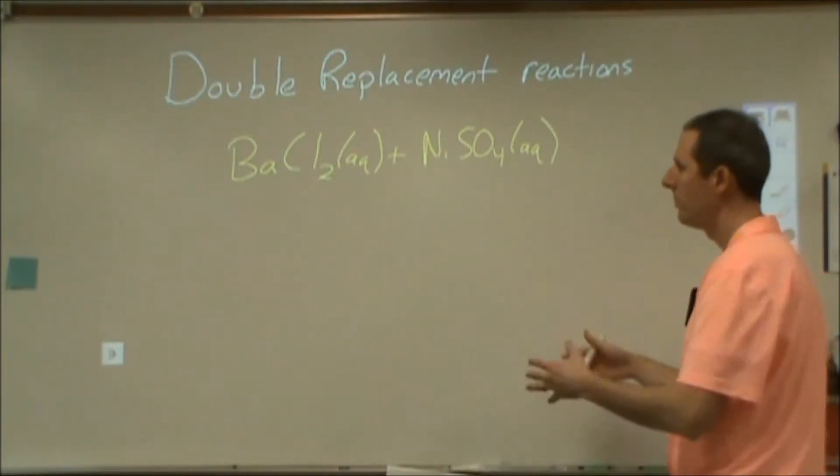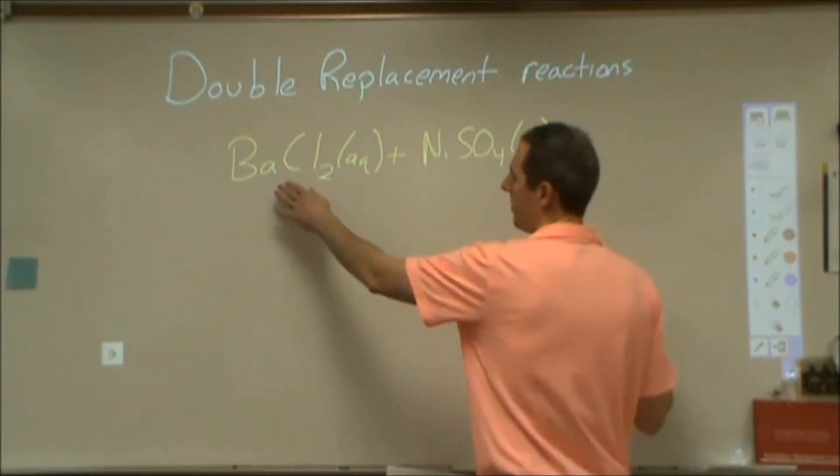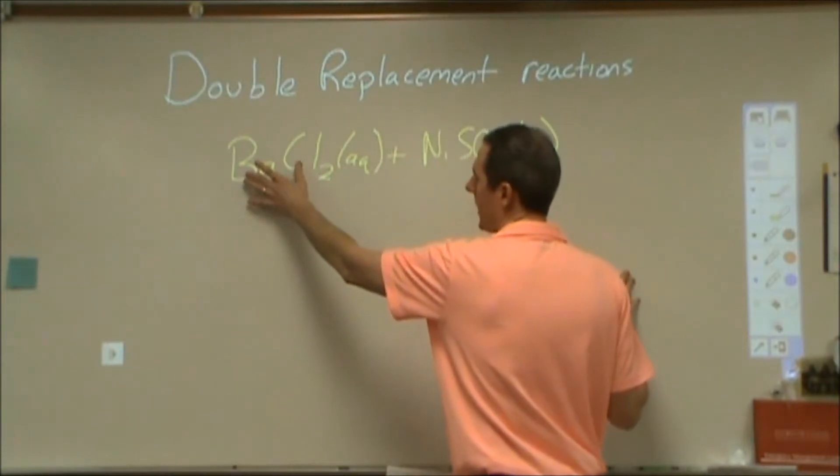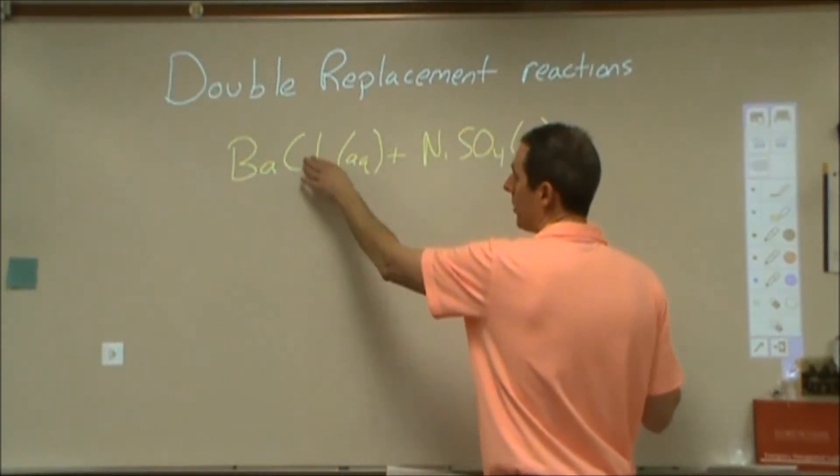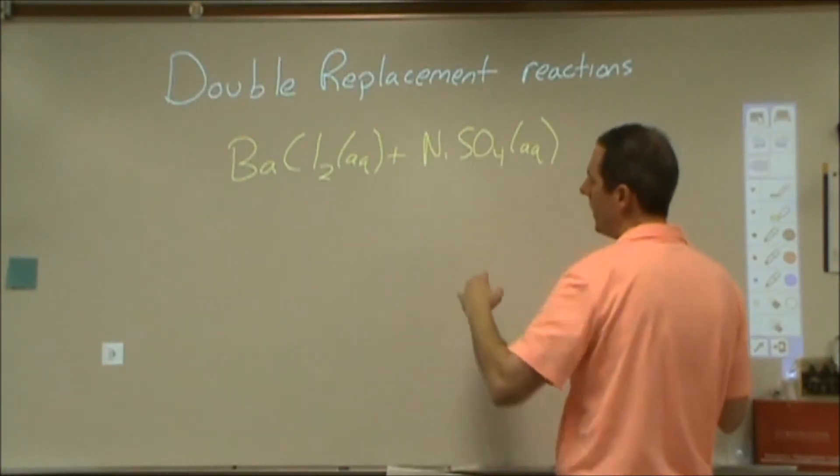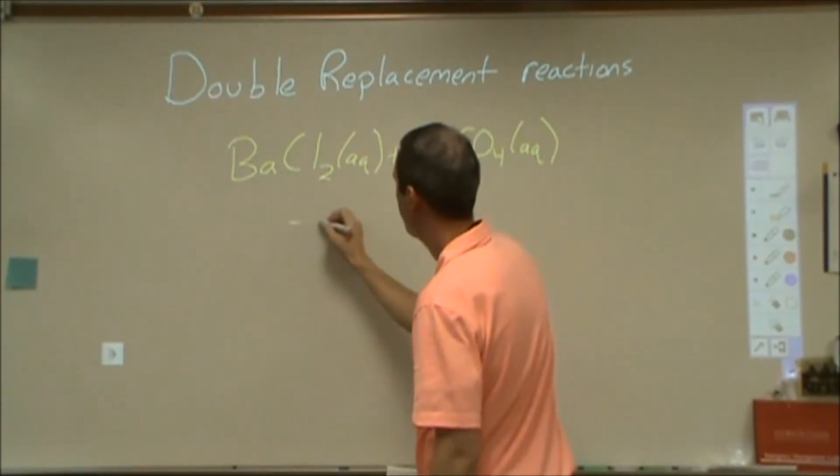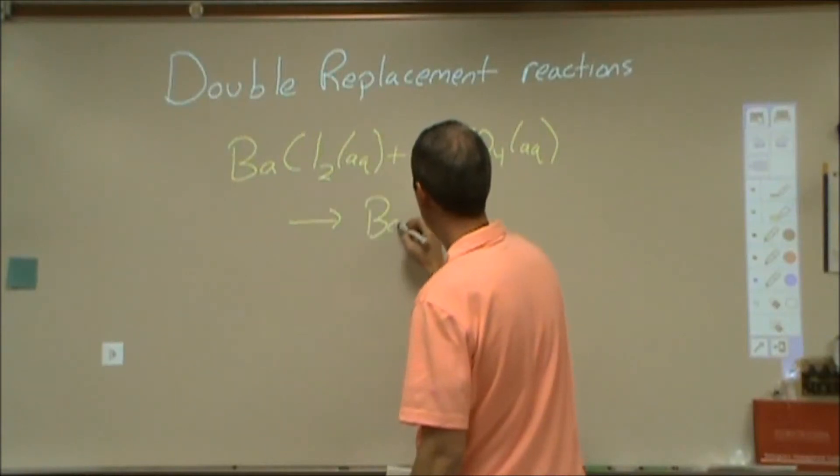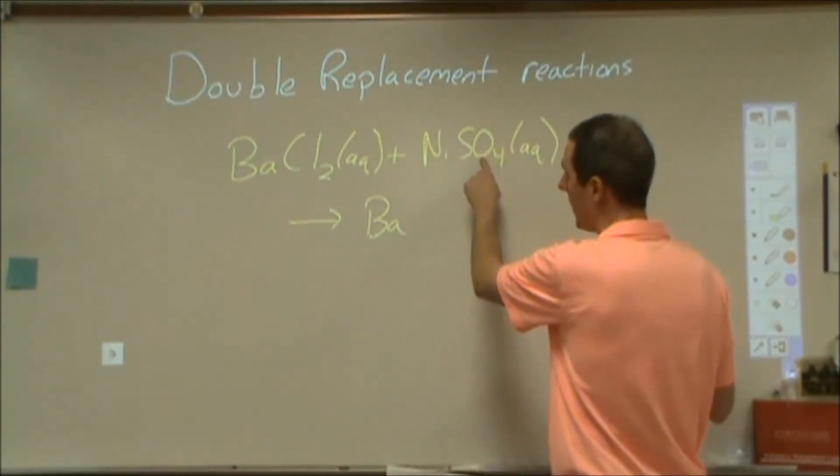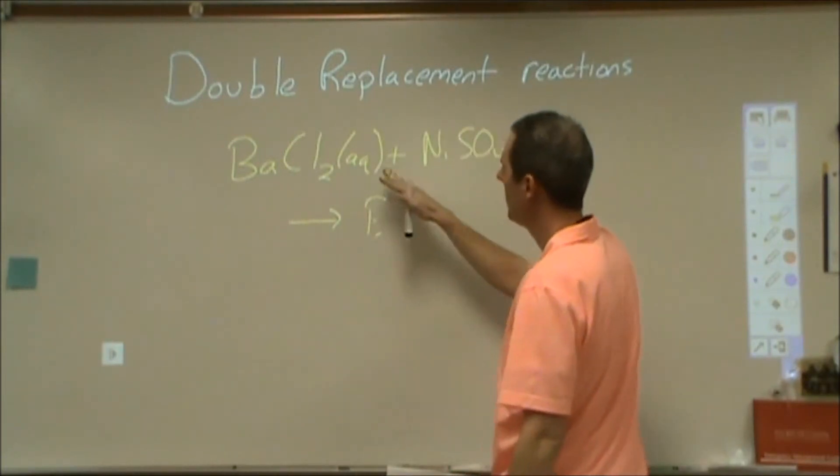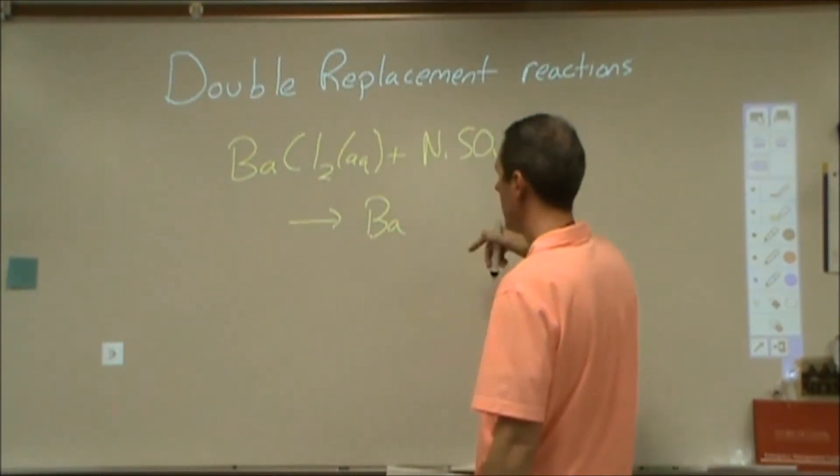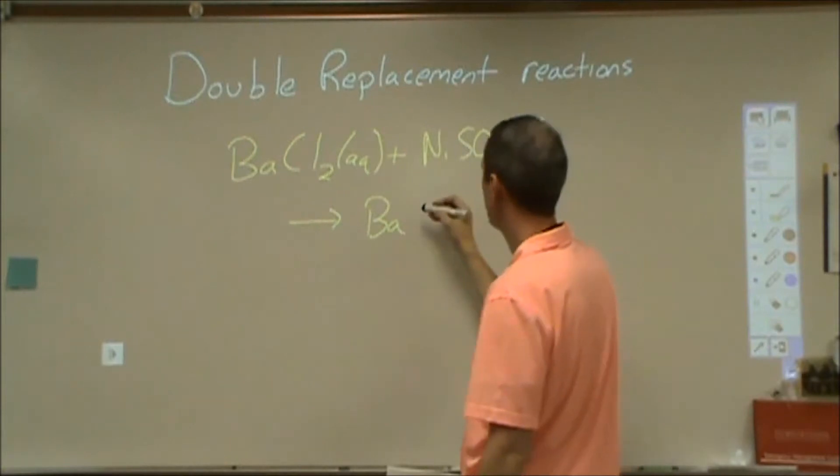A lot of ways that people will tell you how to do a double replacement reaction, but essentially you're going to switch which anion and cation are with each other. So we're starting with the barium cation with the chloride anion, the nickel cation with the sulfate anion, and then we're going to end up reversing that. Some people will say switch the metals or the cations, some people will say switch the anions. It doesn't matter which one you do, as long as you're consistent.